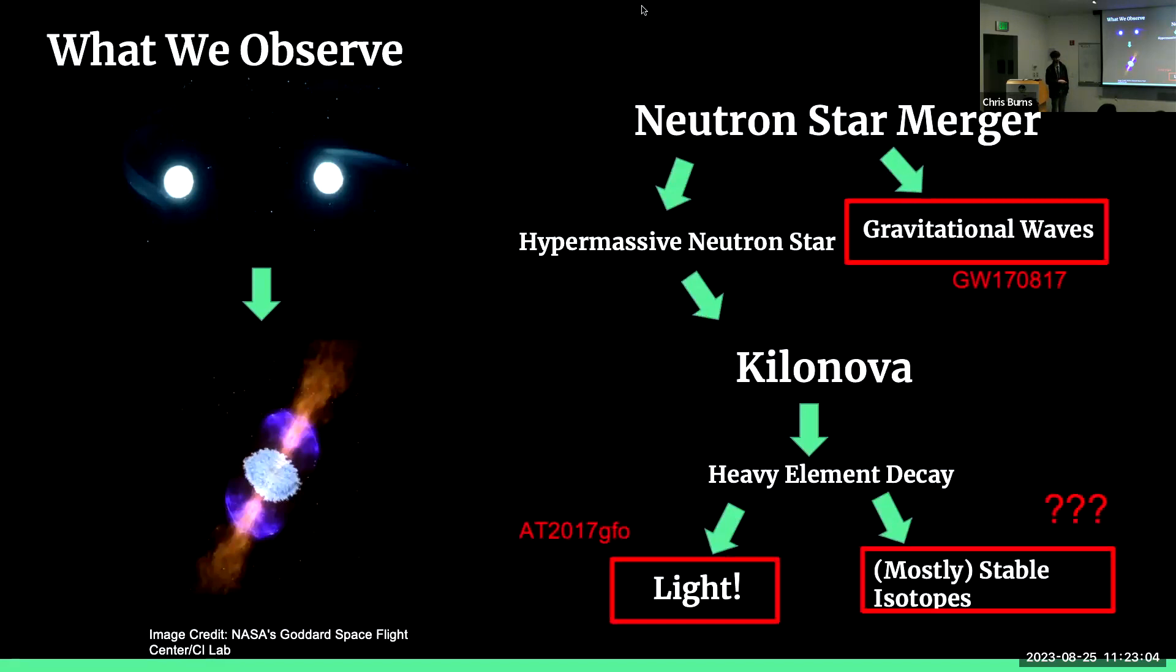Everything that we see in the natural world is made by this, including uranium. So we can observe gravitational waves, and we have with GW170817. And we can also observe the light, which we did in the corresponding case, which is the first case of multi-messenger astronomy. So huge case in astrophysics with AT2017gfo. But then we can also observe these mostly stable isotopes. We live on these mostly stable isotopes. But we don't do too much Kilanova theory based on these mostly stable isotopes. So that's what actually informs this project.